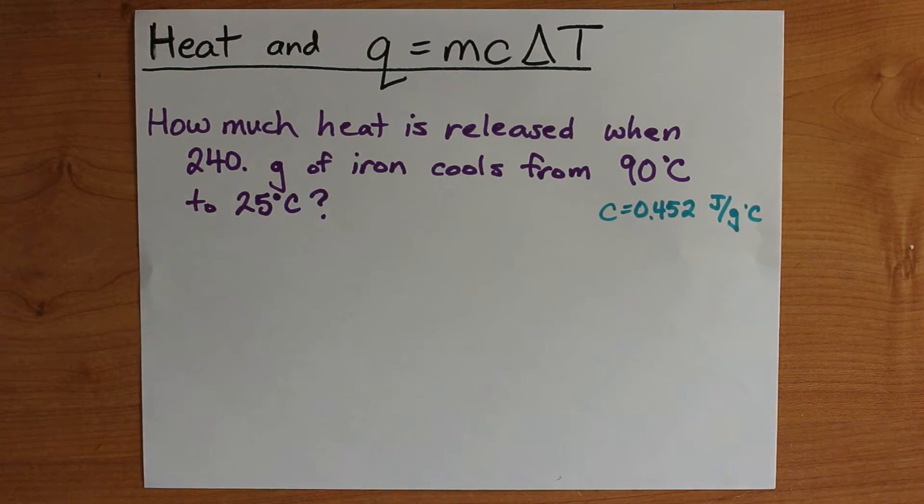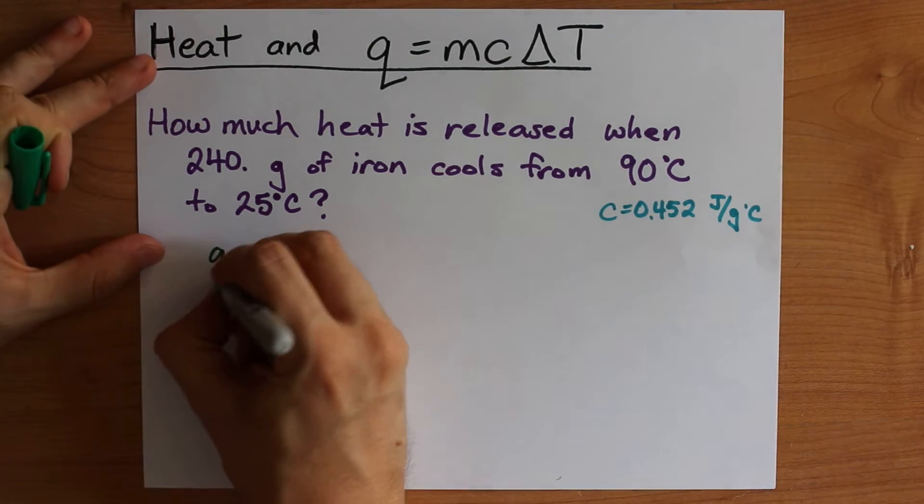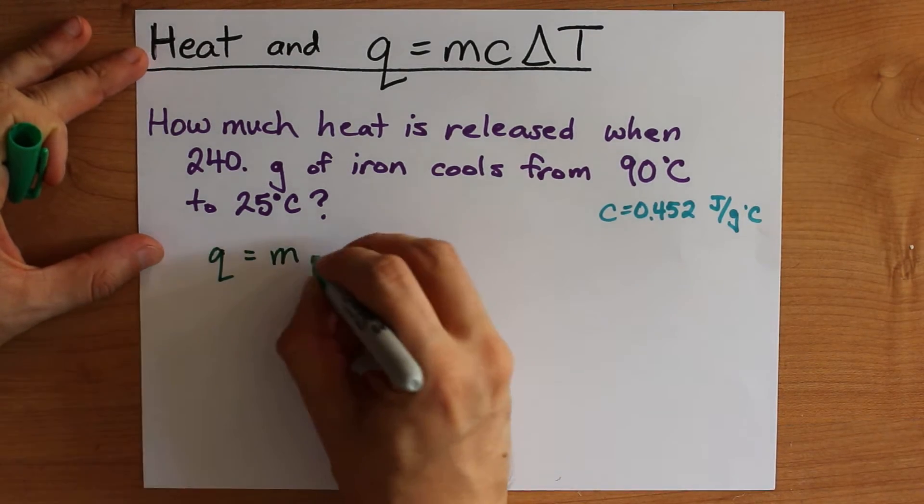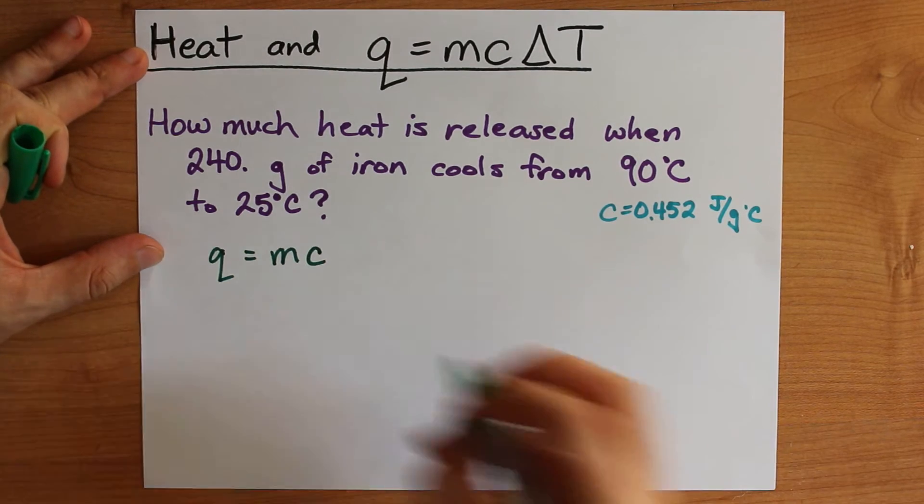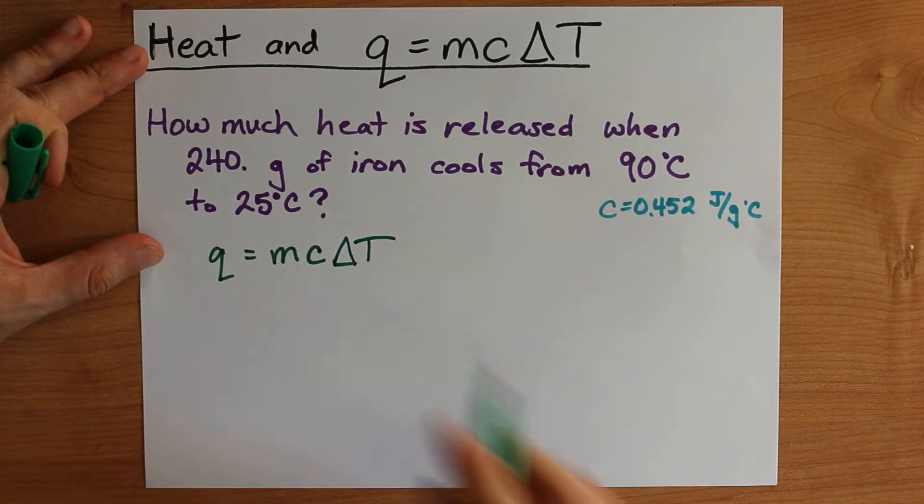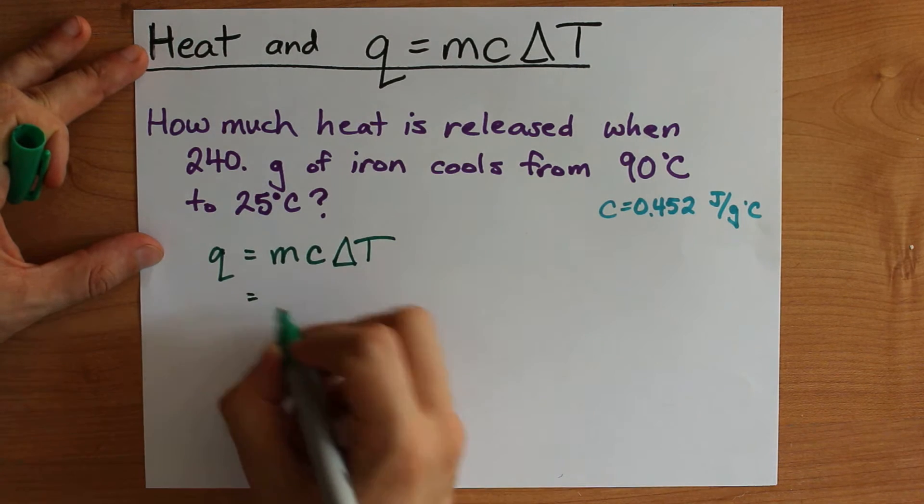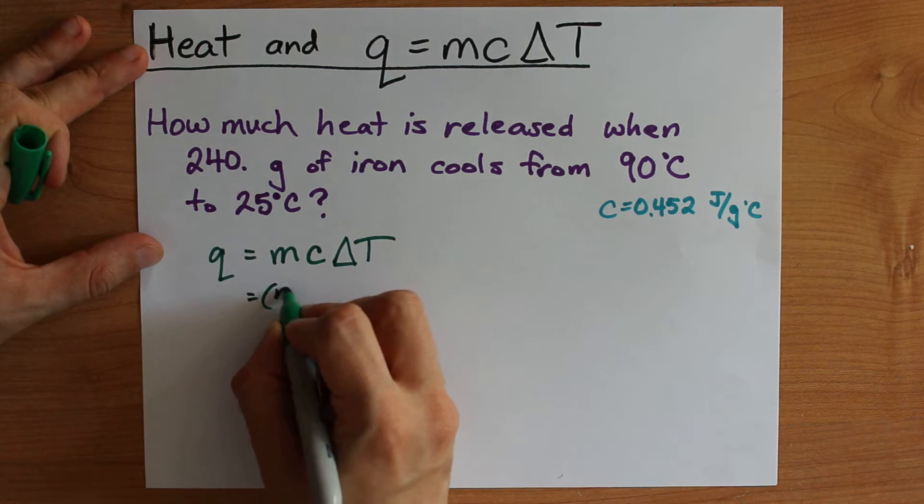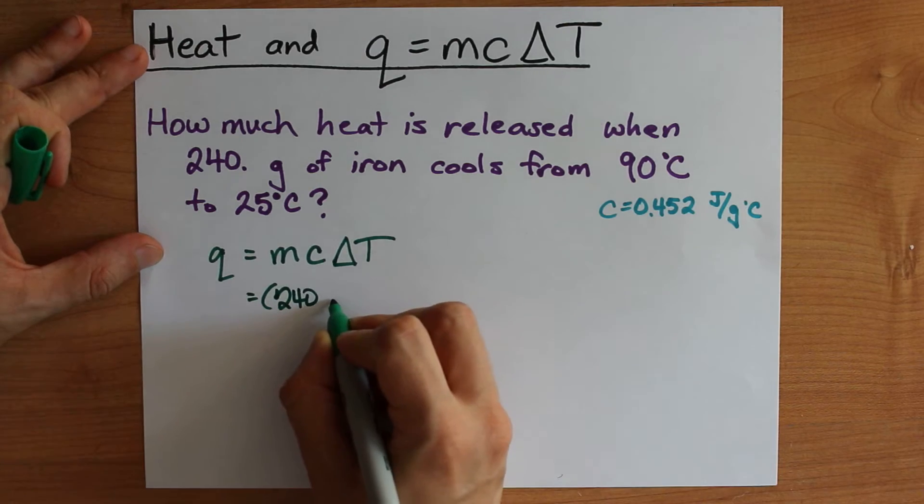To figure out the amount of heat that is transferred in a process, you can use the formula Q equals mass times specific heat capacity times the change in temperature. I hope it's obvious that m is for mass here. So in this case it's just 240 grams.